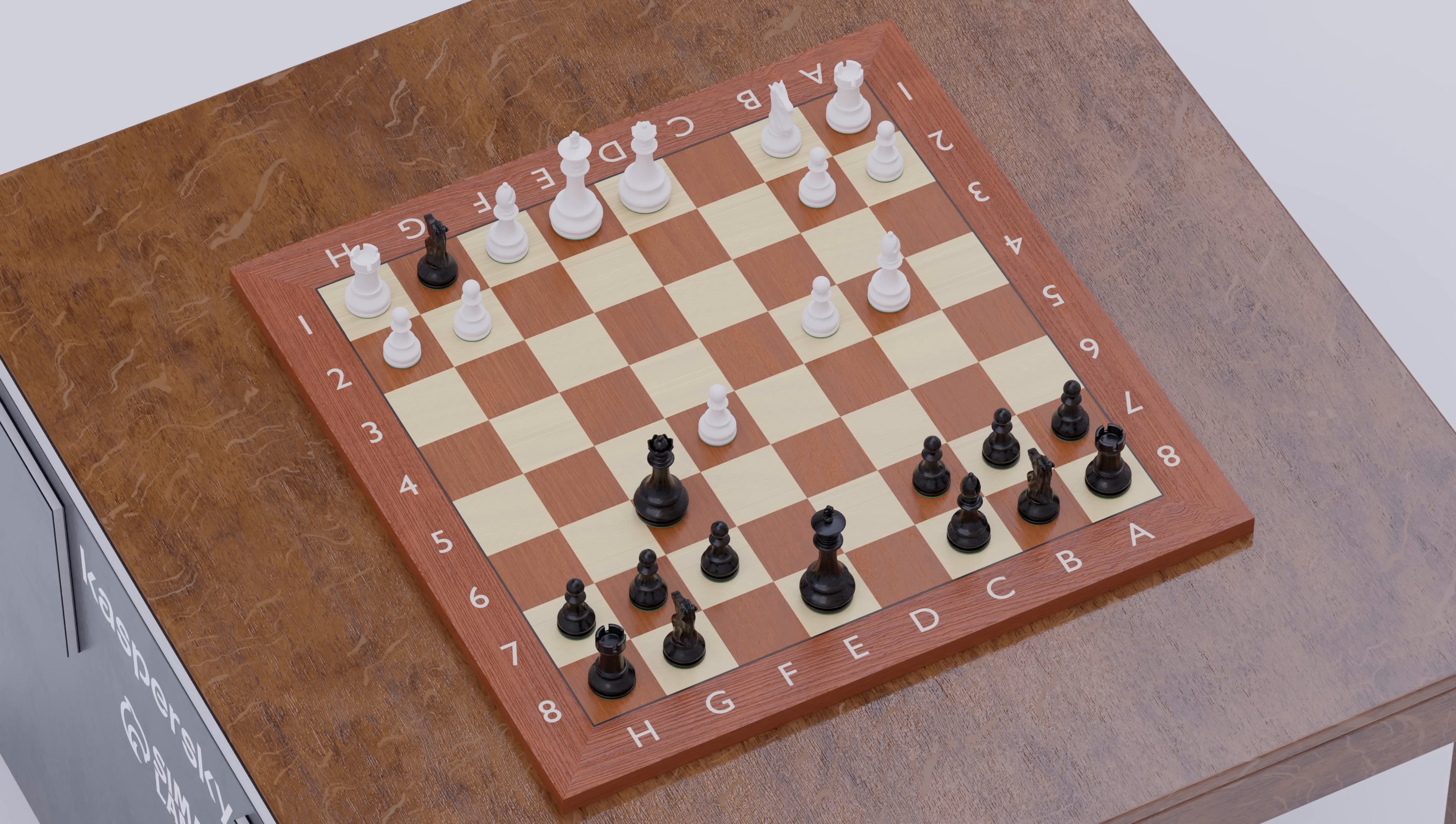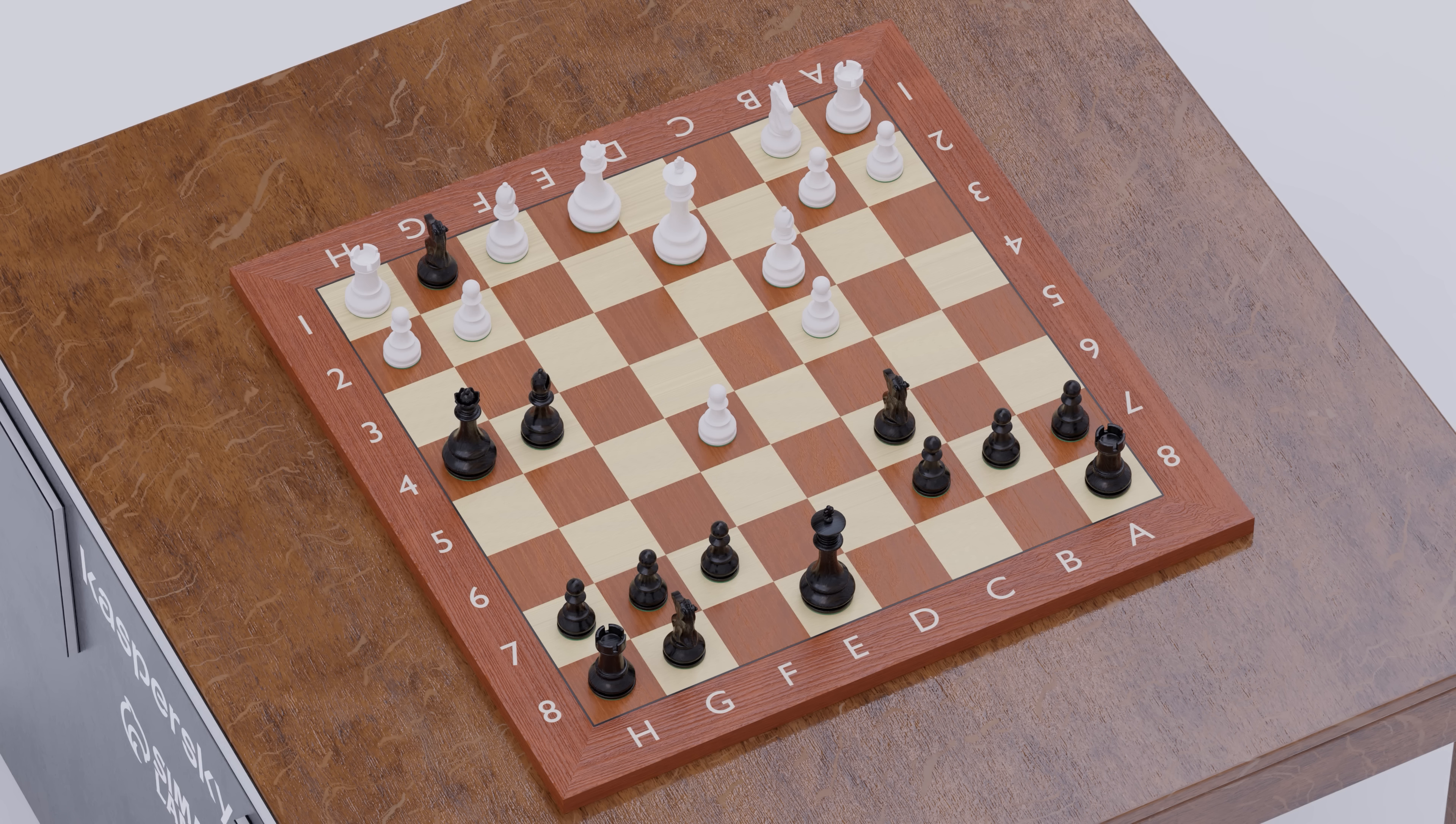We continue the attack with Queen to H4 check, again forcing White to move the King as G3 would result in Queen to E4 check, forking the King and Rook. After Knight C6, White can only play useless moves in an attempt to prolong the game. Bishop C3, Bishop G4 and Queen E1. We can now castle Queen side with check, and White is completely lost.